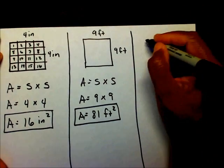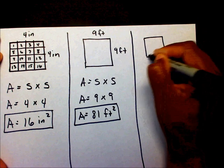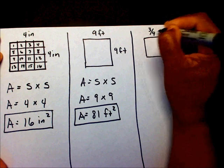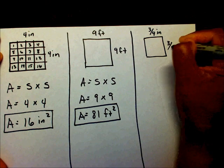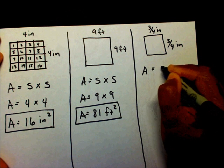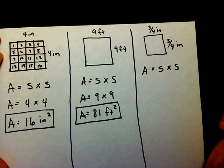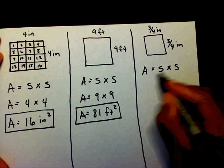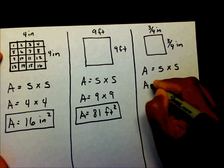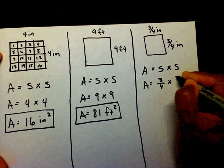Let's do another one. Let's say this was three-fourths inches and three-fourths inches. So I have A equals side times side. You always write your formula down first.